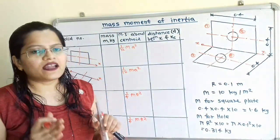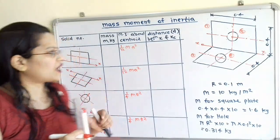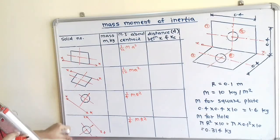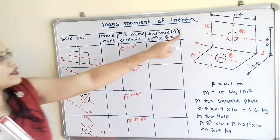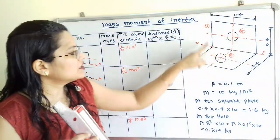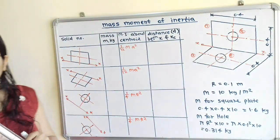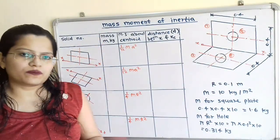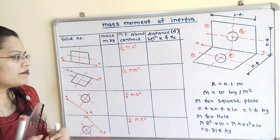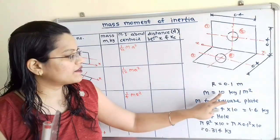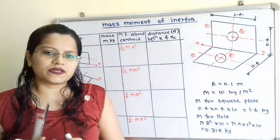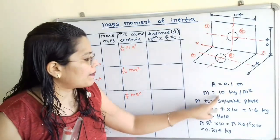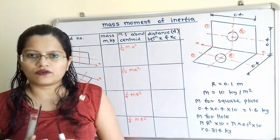To find out the mass moment of inertia, we have to prepare a table. The first column is the solid number, where we mention all solids as per the given numbers. The second column is for mass. In the question, mass is given as M = 10 kg per meter square, meaning that for 1 meter square area, mass is equal to 10 kg.